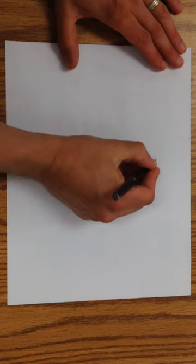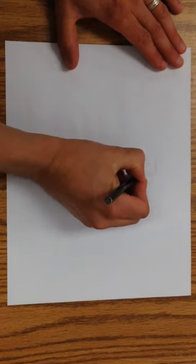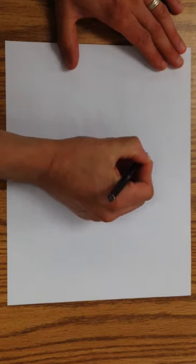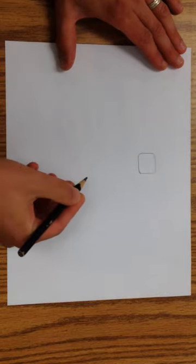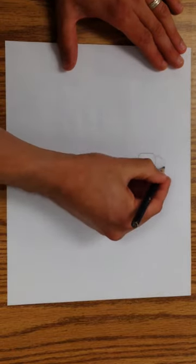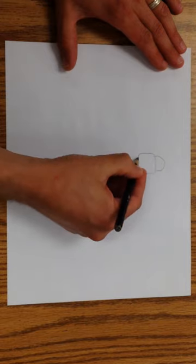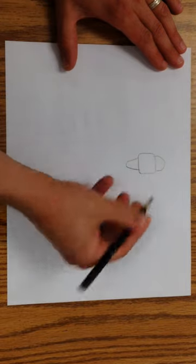We're going to go right here. Draw a square with rounded corners, kind of like a marshmallow, and then draw an arch over top and a little letter U down below.